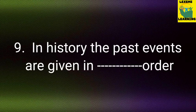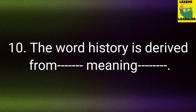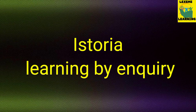Question number 9: In history, the past events are given in dash order. Answer: chronological order. Question number 10: The word history is derived from dash, meaning dash. The word history is derived from a Greek word, and its meaning is story — that means learning by enquiry.